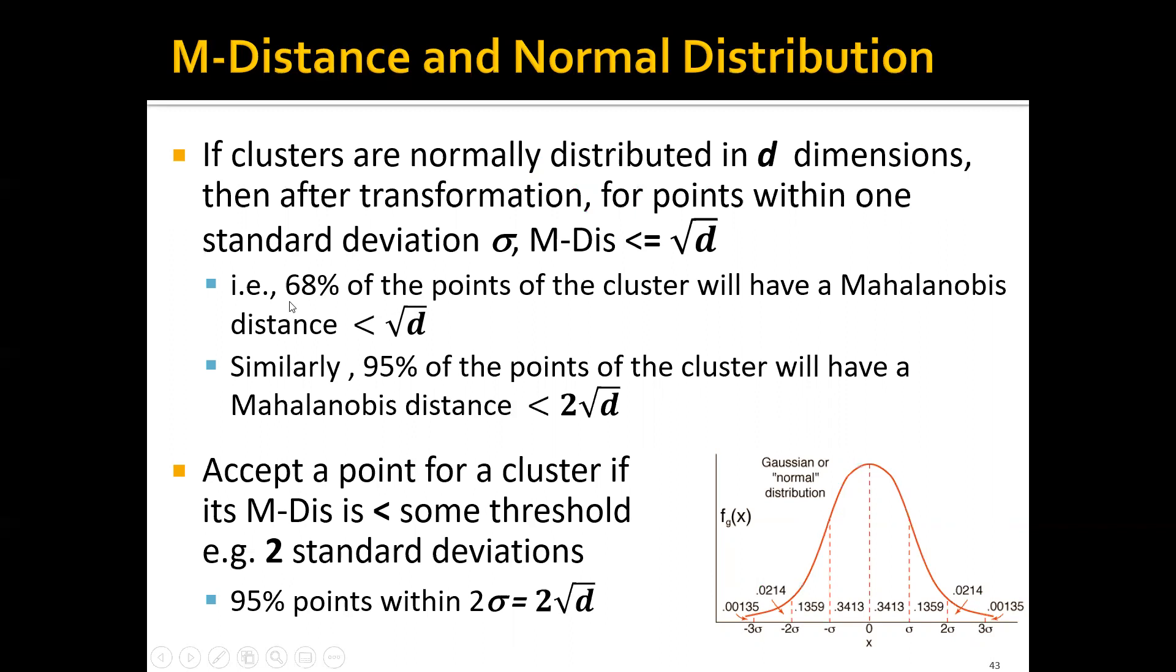So where does this 68 percent come from? If you look at a normal distribution here, and if you look at the area under the curve, you can see that about 68 percent of the area is between negative sigma and sigma. And similarly, if you look closer, you can find that about 95 percent of the area is between negative 2 sigma and 2 sigma.